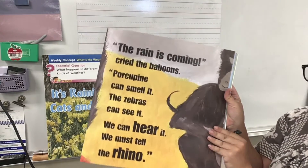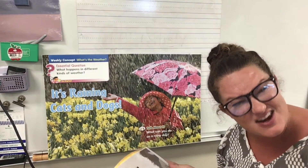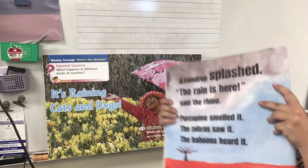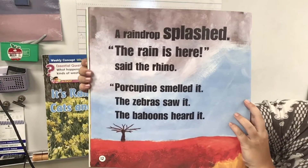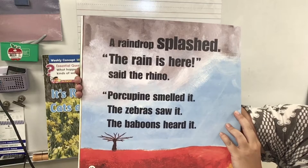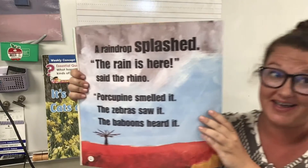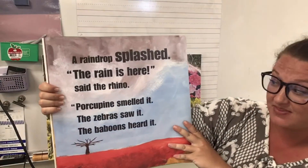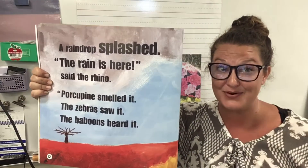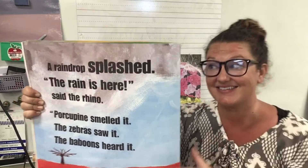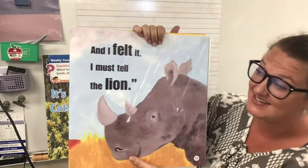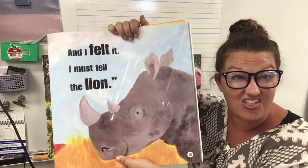It's pretty interesting to think about the ways that the animals can tell the rain is coming. A raindrop splashed. 'The rain is here,' said the rhino. 'Porcupine smelled it. The zebras saw it. The baboons heard it. And I felt it. I must tell the lion.'